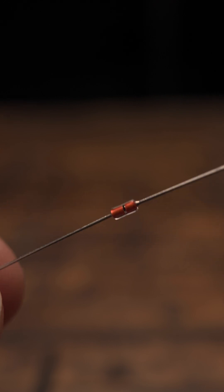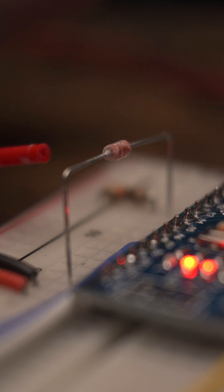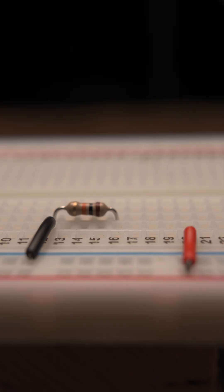A thermistor is a special type of resistor whose resistance changes significantly with temperature. Here, we have two regular 10K resistors in series configured as a voltage divider.